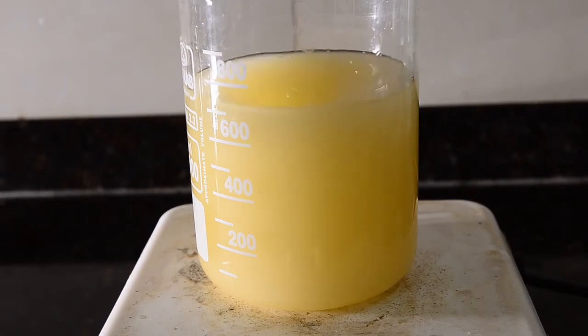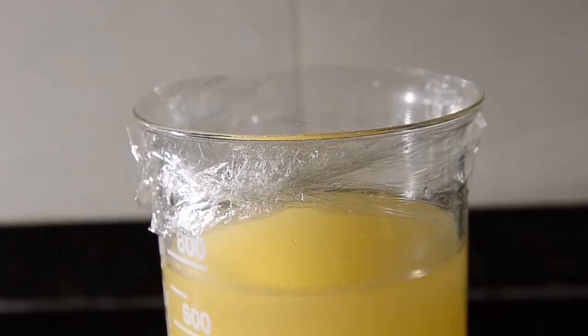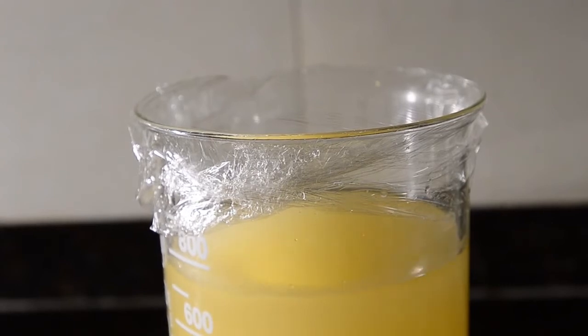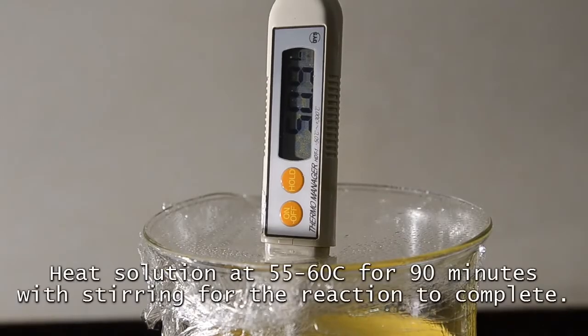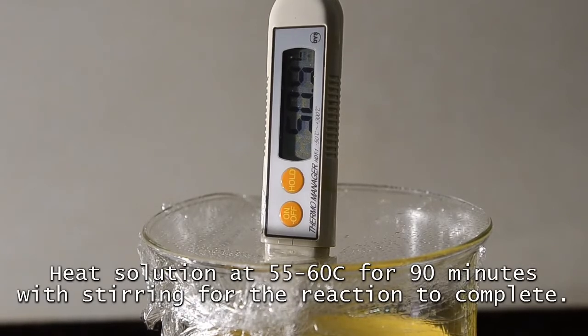Our reaction will now start to take place in the mixture and you'll slowly see the cloudiness fade and the mixture will become a bit less viscous. Cover the top of the beaker with plastic film so that methanol vapor doesn't escape. And now gently heat the mixture so that it is at a temperature of 55 to 60 degrees C for the next 90 minutes.